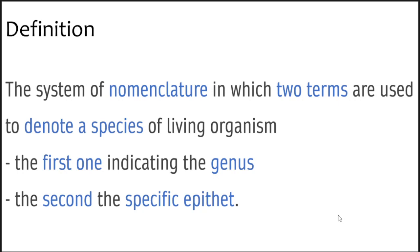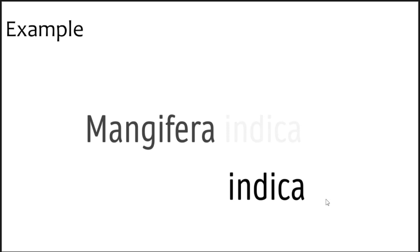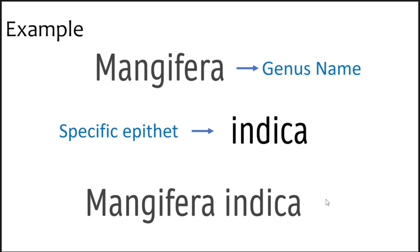Let us take a very familiar example: Mangifera indica. It has two parts — Mangifera and indica. Mangifera is the genus name, also called the generic epithet or generic name, whereas indica refers to the specific epithet. Together, they constitute the name of the species, that is, Mangifera indica.